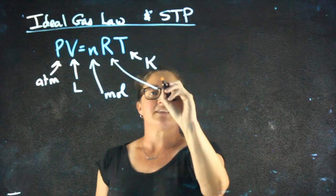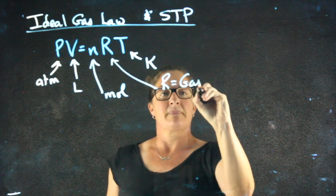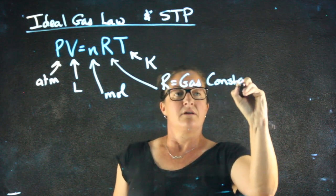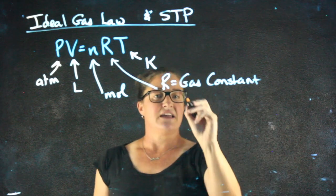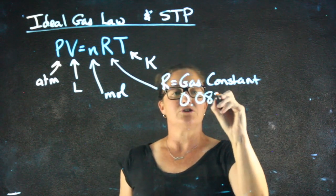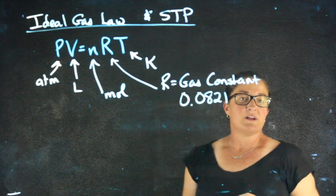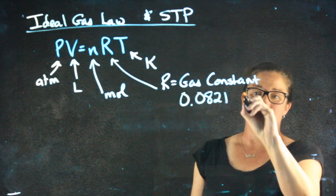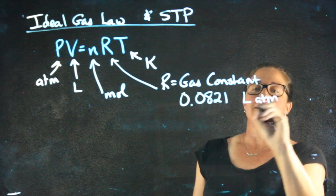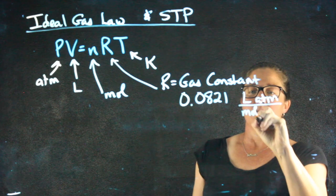R is known as the gas constant. The gas constant is 0.0821. The units on it, if you care, I'm never going to ask you them, are liters ATM per mole Kelvin.